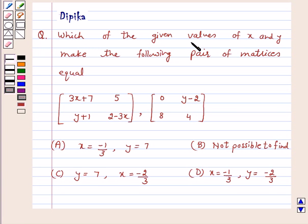Question says, which of the given values of x and y make the following pair of matrices equal? A matrix of order 2 by 2 whose elements are 3x plus 7, 5, y plus 1, 2 minus 3x, and another matrix of order 2 by 2 whose elements are 0, y minus 2, 8, 4.